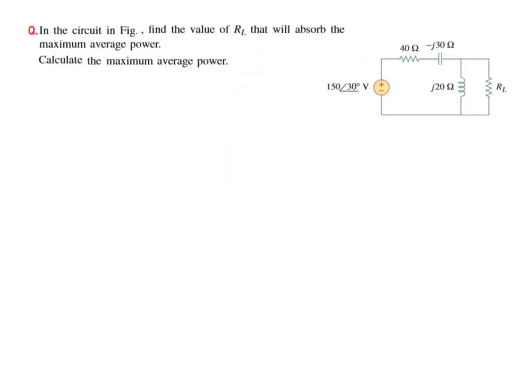I will solve one or two examples. In this example, the load is R_L, purely resistive, and this is the remaining circuit. We need to find the value of R_L that will absorb maximum average power and calculate the maximum average power. We need to find Z_Thevenin and V_Thevenin from the rest of the circuit.